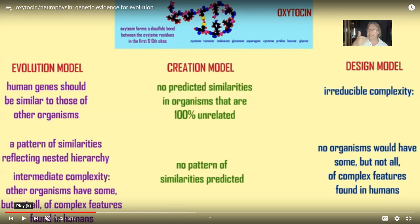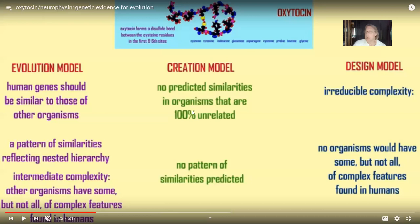Signals can be anything, as long as the other person recognizes it as a signal. Any molecule could be a signal, as long as a cell perceives it as such. Hormones are easy examples because they're just locks and keys — if the hormone fits the receptor, it works. So there's no specific structure it has to have. Consider oxytocin: there is no reason other animals would have to have oxytocin because it's just a signal. Other animals, if they were 100% unrelated, could have hormones and signals which were 100% unrelated. There are no similarities expected, and certainly no pattern of similarities.